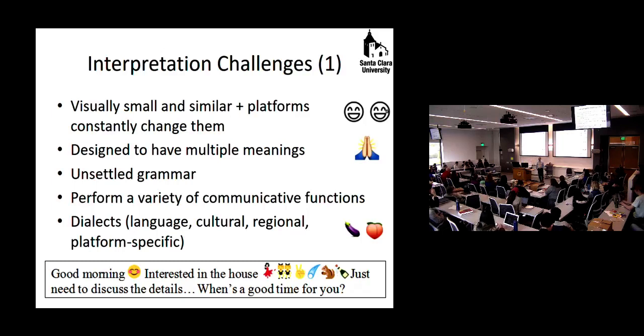And finally, emojis can form dialects. That's not unique at all. All different types of ways that we communicate form dialects. As you may know, different kinds of hand gestures have different meaning in different geographies. Different words will definitely have different meanings. That's not unique whatsoever. And so dialects form based on language. They form based on culture. They form based on region.